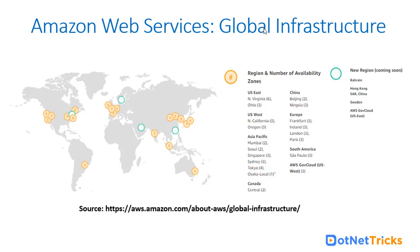The map on your screen represents the entire globe showing different continents. The orange color circles represent different regions across the globe where AWS has hosted its facility to offer its services, data centers, and physical infrastructure. The number inside each circle represents the number of availability zones in that region.